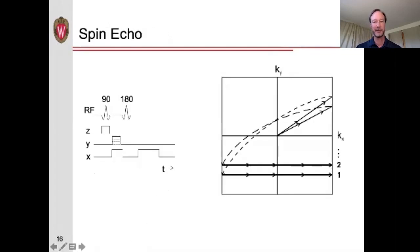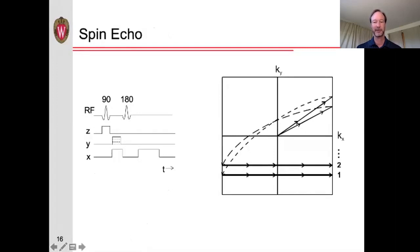Let's take a look at the spin echo. Somewhat similar — after the 90-degree pulse we've excited the spins, putting us in the center of k-space. We then apply a gradient in both the X and Y direction, moving us in the positive X and Y direction in k-space. What the 180-degree pulse does is it flips us to the other side of k-space. Now with a positive gradient, we acquire our signal and move to the right in k-space. We repeat this for different amounts of phase encoding, acquiring the different lines in k-space.